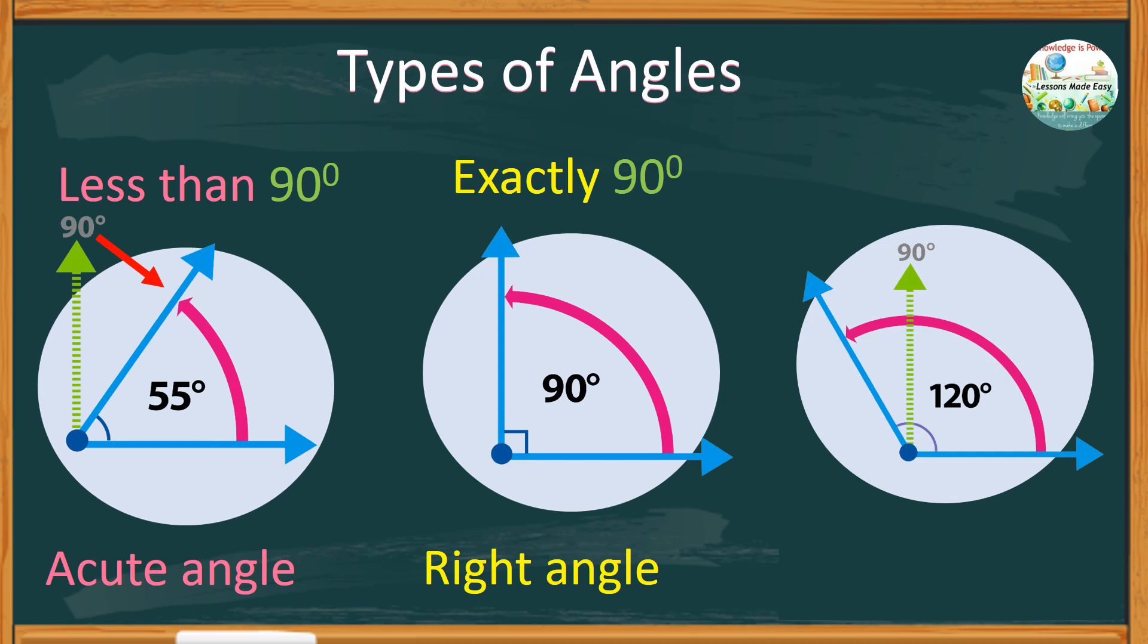On the other hand, if one side of the angle bends outwards, making the corner more than 90 degrees, but less than 180 degrees, this type of angle is called an obtuse angle.